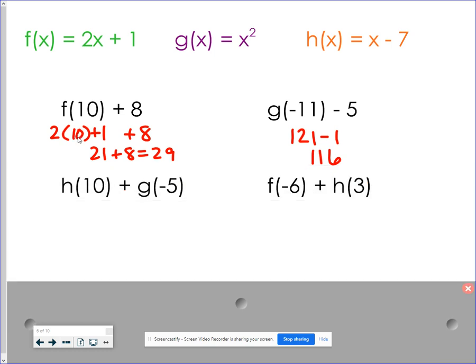In my next problem, I've got the h function using 10 for an input and the g function using negative 5 for an input. And then I want to add those together. So for the h of 10, 10 minus 7 right from that function would be 3. G of negative 5 would be negative 5 squared is 25. That gives me 28. f of negative 6. Now this is the only one that's kind of a multi-step one. So f of negative 6. 2 times negative 6 is negative 12, plus 1 is negative 11. h of 3 would be 3 minus 7 would be negative 4, and negative 11 and negative 4 is going to be negative 15.